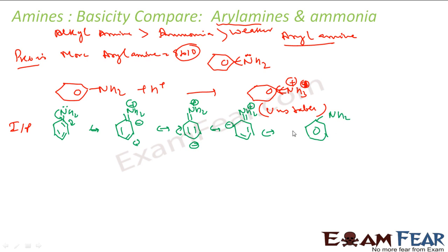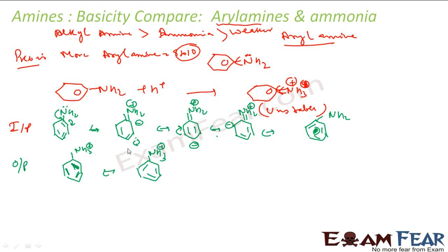We get a total of 5 resonating structures for the input aniline. For the output NH3+, you can draw only 2 resonating structures. Since more resonating structures means more stability, the reactant with 5 structures is more stable than the product with 2. This means the reaction will not happen, confirming arylamine is much less basic.